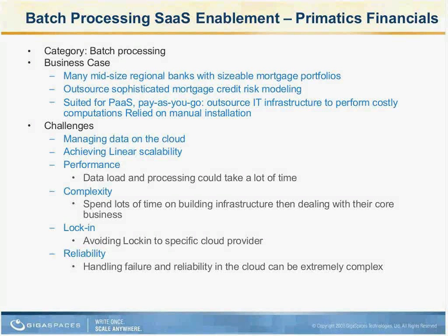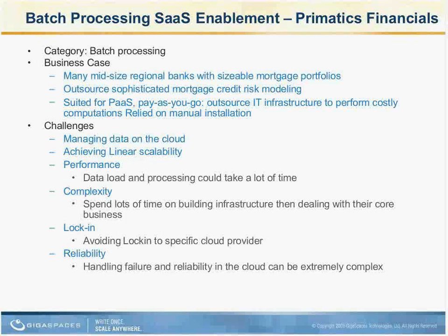The first category is batch processing. The use case is based on Pragmatics, a financial organization that started not as a big company but provided services for risk analysis. Over time, when cloud came in, they realized they could offer not just algorithms but the full solution to their customers. Their customers happened to be high-end banks, so security was an important factor.